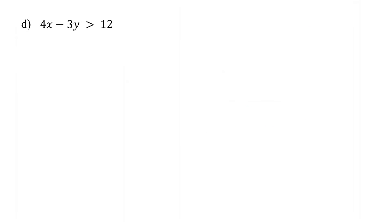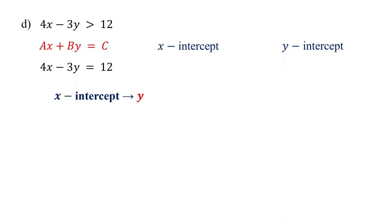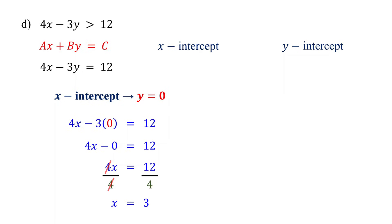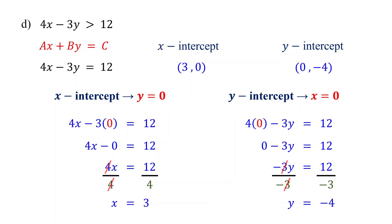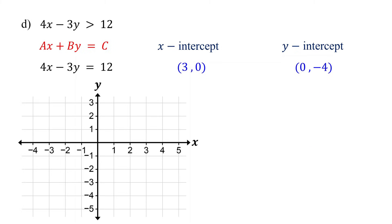Now it's your turn. Pause the video and graph the boundary line. Start by finding the x and y-intercepts. The x-intercept occurs when y equals 0. Set y to 0 and solve for x — this simplifies to 4x equals 12. Dividing both sides by 4, you get x equals 3. The y-intercept occurs when x equals 0. Set x to 0 and solve for y — this simplifies to negative 3y equals 12. Dividing both sides by negative 3, you get y equals negative 4, so the y-intercept is 0 comma negative 4. Plot the intercepts: x-intercept at 3 comma 0 and y-intercept at 0 comma negative 4. Finally, draw the boundary line. Since the inequality is strictly greater than, use a dashed line.